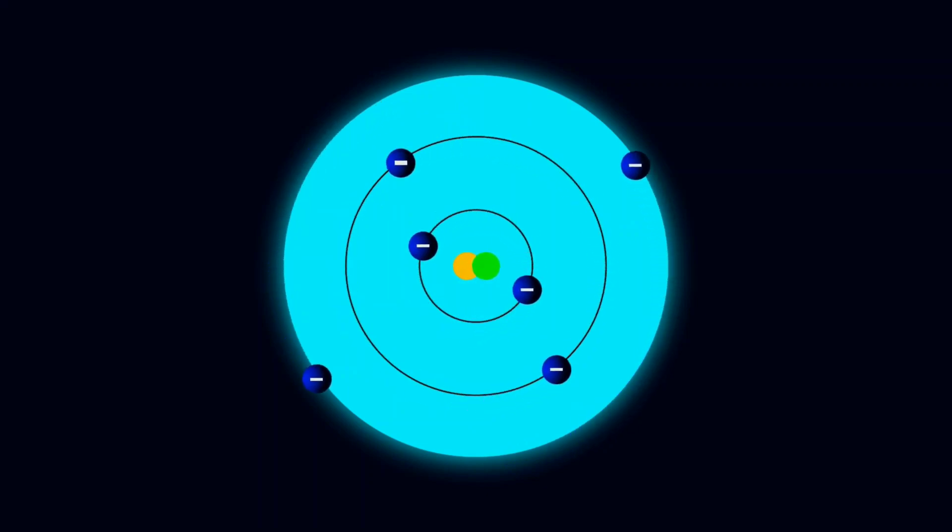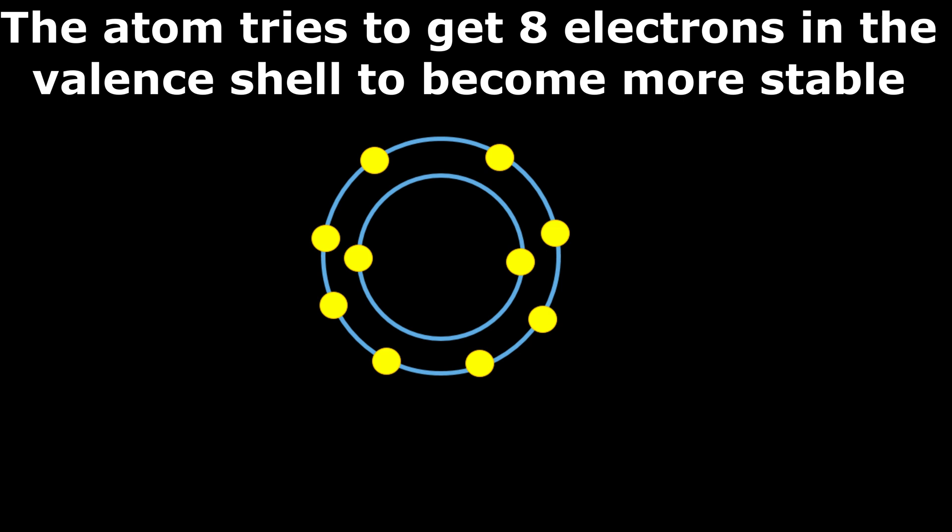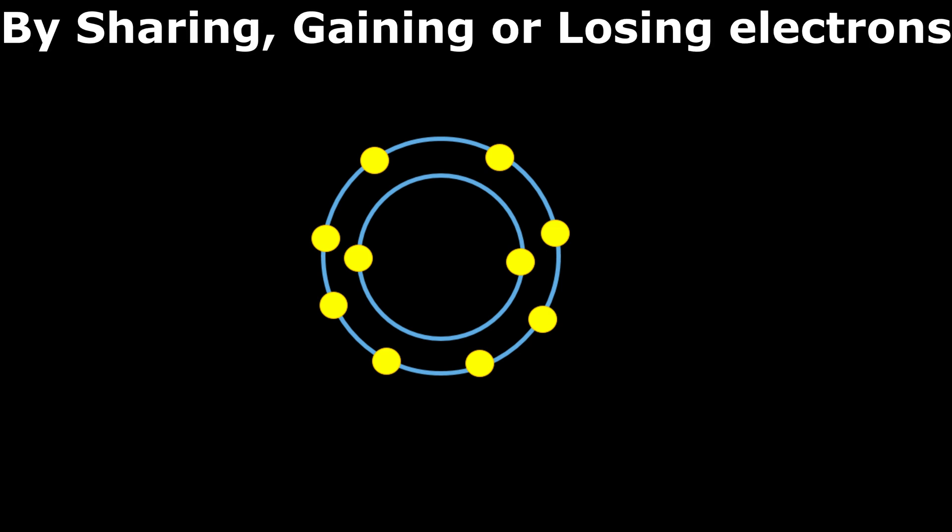Actually, these are the electrons that are more easily available for interaction with other atoms, as they are present in the outermost orbit, and also most loosely bound to the positively charged nucleus of the atom. The atom tries to get 8 electrons in the valence shell to become more stable by either sharing electrons with other needy atoms or by gaining or losing electrons to other atoms.